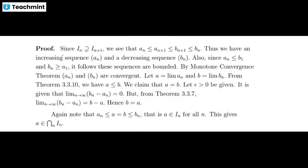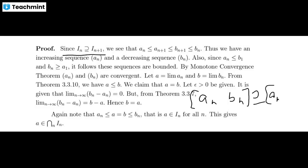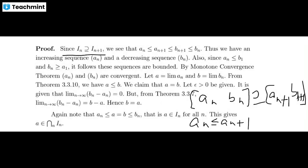Starting with the hypothesis: since we have a nested (decreasing) sequence, if Iₙ has left endpoint aₙ and right endpoint bₙ, and Iₙ contains the next interval [aₙ₊₁, bₙ₊₁], then this inclusion implies that aₙ ≤ aₙ₊₁, and aₙ₊₁ ≤ bₙ₊₁.